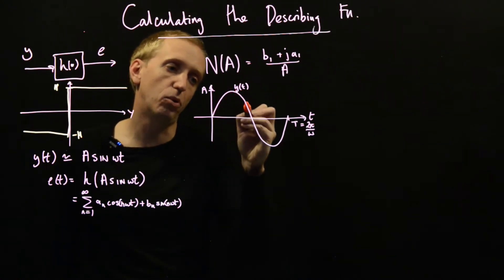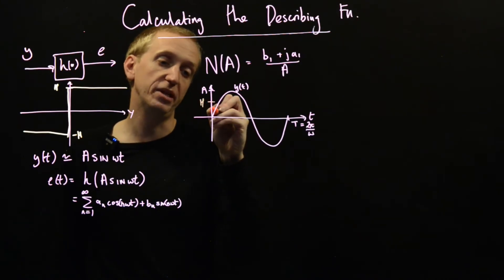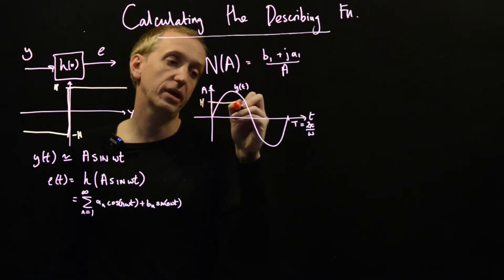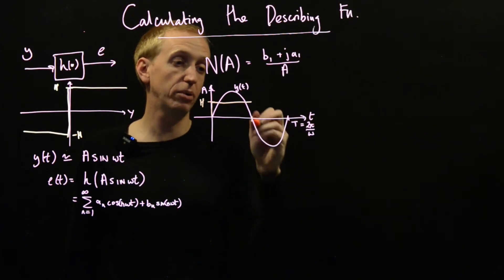So on this portion of the input, the input is positive, so the output will just be equal to h. So we'll get this. And then at t over 2, things flip to being negative in the input, so our output similarly flips to be minus h.